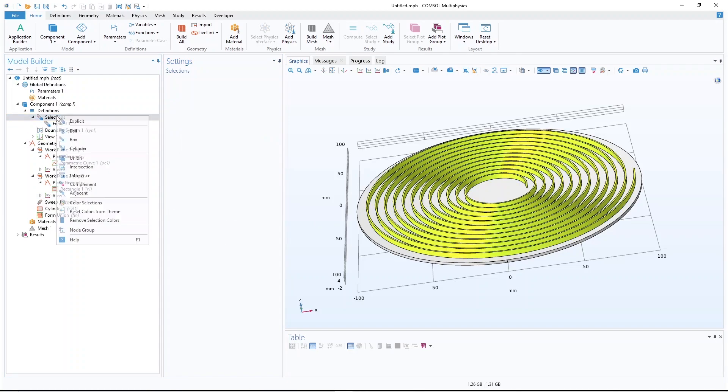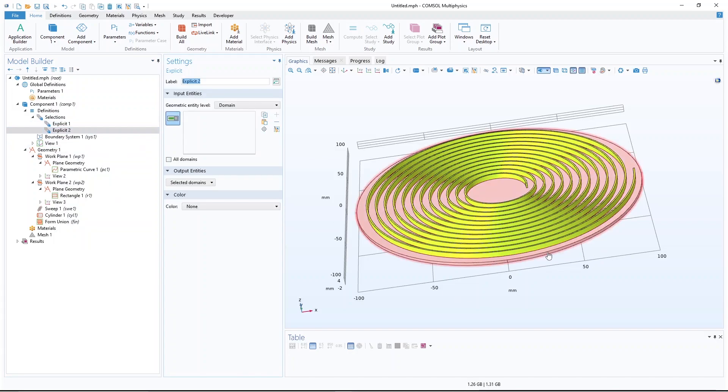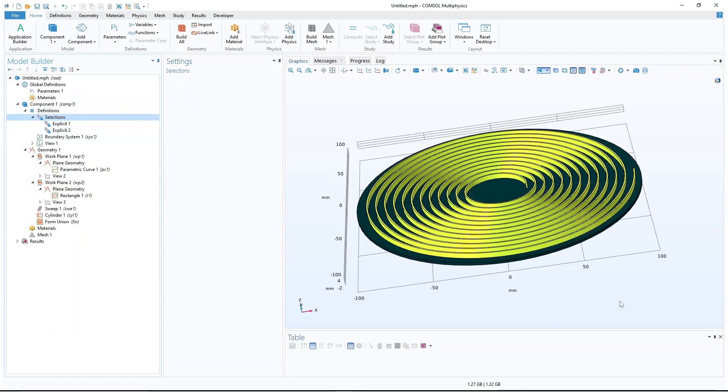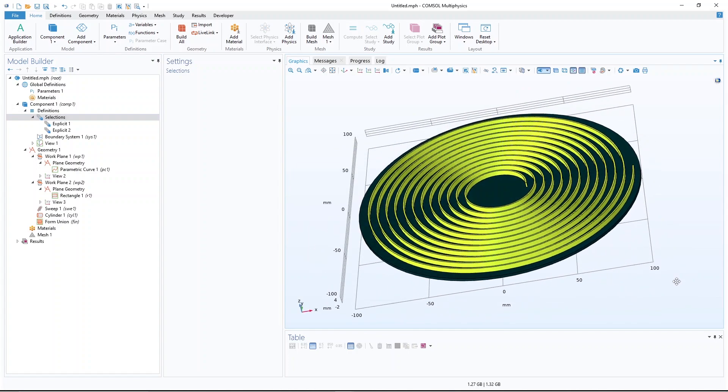And then let's say I want to color the other one black. So explicit and then I select this one. Here you can select black. So now we have a yellow spiral on top of a black disk.